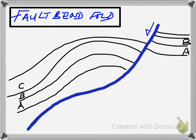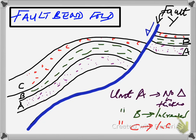Before I go further, I'd like you to take note of the different stratigraphic sections A, B, and C, and note the changes in their thicknesses as you go from the hanging wall on your left to the foot wall on your right. If you look across fault one, the first thing to observe is that unit A does not show any change in its thickness across the fault. On the other hand, units B and C actually show a marked increase in thickness as you move from the foot wall to the hanging wall. The next question is: what's driving these thickness changes?